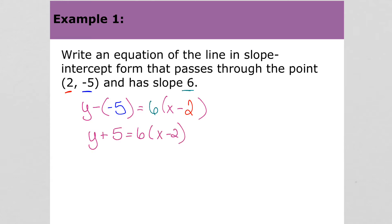Now this is point slope form, but we want it in slope intercept form. So we'll distribute the 6 and then subtract 5 from both sides. This gives us the equation of the line - that should be 17 - in slope intercept form.